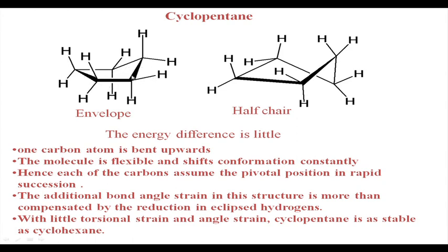You cannot say that only one particular carbon is occupying the tip of the envelope; it is oscillating between all the carbon atoms in cyclopentane. In the half chair conformation, three carbon atoms are in a plane, one carbon is above this plane, and another carbon is below the plane.